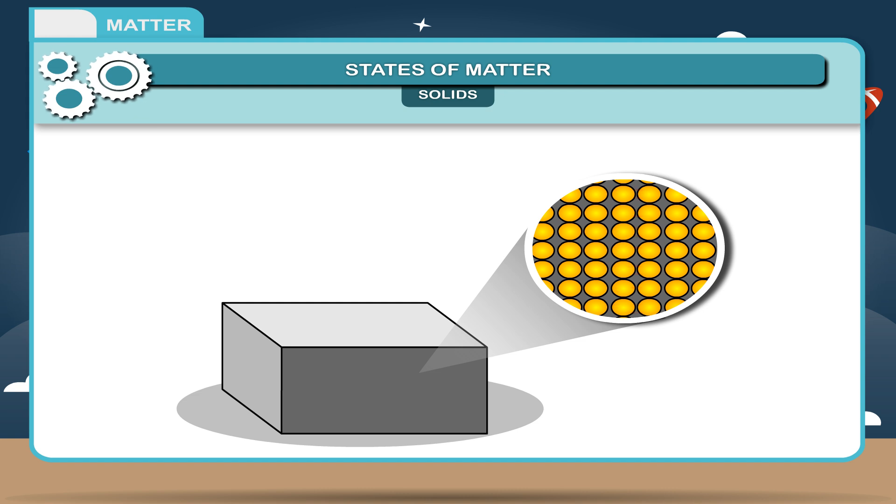Thus, in solids, molecules are closely and orderly arranged. The solids can be characterized by the given properties.